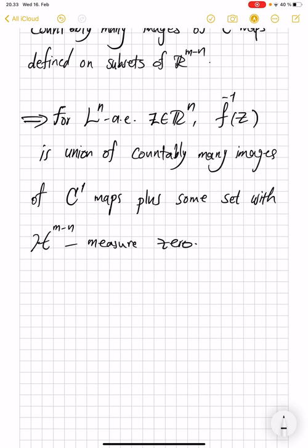That comes from our previous analysis. Suppose z is in one of those points whose pre-image does intersect this critical set or this null set, but only on a negligible H^{m-n} negligible part, but it is still there.